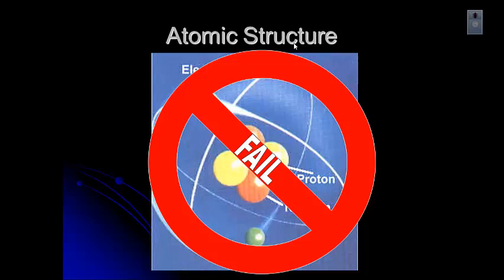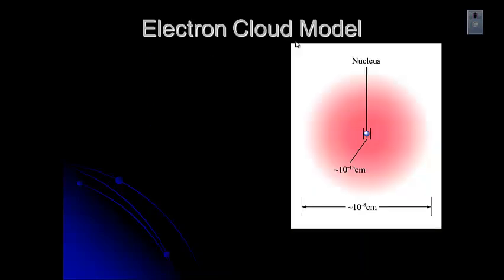The current electronic model is called the electron cloud model. In the center, the nucleus is very tiny. You can see 10 to the negative 13th centimeters, very small. Around the outside, you can see these different shaded areas. The more shaded it is, the more likely there is to be an electron there. The lighter it gets, the less likely there is to be an electron there. The size of a typical atom is about 10 to the negative 8th centimeters.